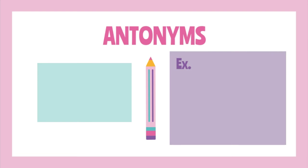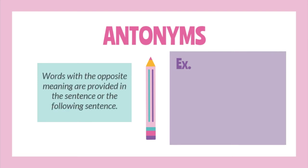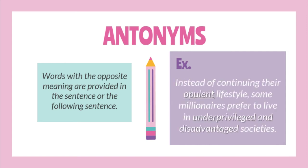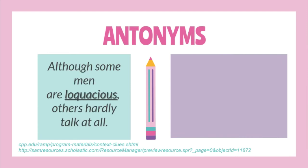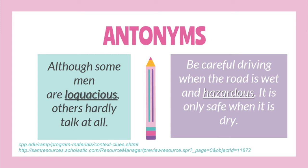The second type of context clue is the antonym. Words with the opposite meaning are provided in the sentence or in the following sentence. For example, 'Instead of continuing their opulent lifestyle, some millionaires prefer to live in underprivileged and disadvantaged societies.' The words underprivileged and disadvantaged are opposite terms of the word opulent. Next: 'Although some men are loquacious, others hardly talk at all.' The phrase 'others hardly talk at all' is the opposite of loquacious, which means talkative.